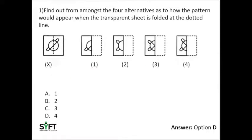Find out from amongst the four alternatives as to how the pattern would appear if the transparent sheet is folded at the dotted line. The first thing to mark here is that it is a transparent sheet, so after folding, the lines drawn on that sheet would also appear along the line on which it is folded. This is figure X — we have to fold along this dotted line, folded to the left side.